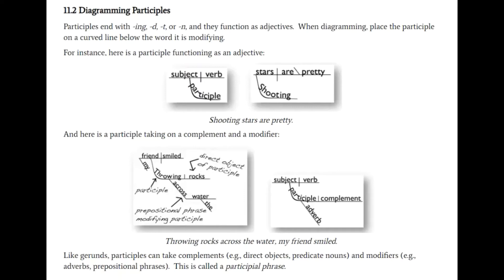Here we see a participle functioning as an adjective modifying 'stars,' and it's diagrammed on a curved, swooping line. Like gerunds, a participle can take on a complement or modifier. Let's look at: 'Throwing rocks across the water, my friend smiled.' Which friend? My friend throwing rocks across the water. We have a long participial phrase functioning as an adjective of the noun 'friend.' 'Throwing' is on a curved line and gets a direct object — throwing what? Throwing rocks. Where? Across the water — an adverbial prepositional phrase modifying the participle.